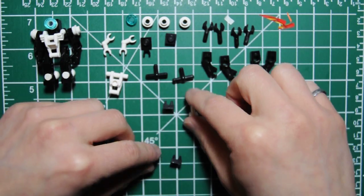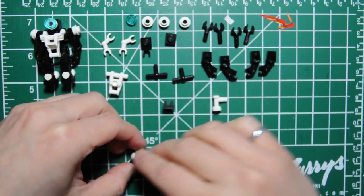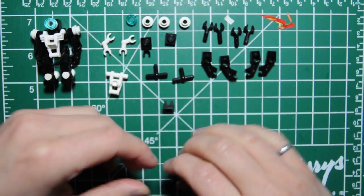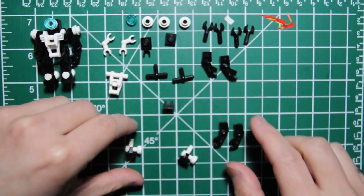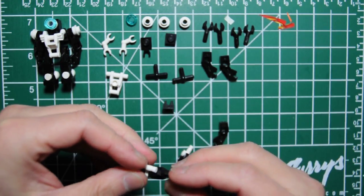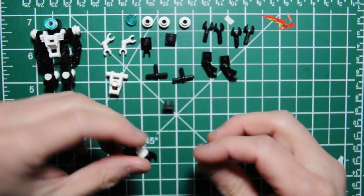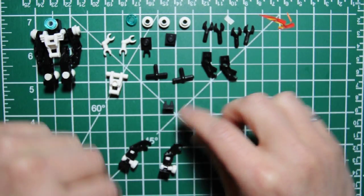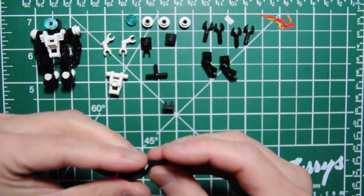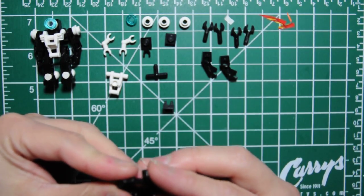To start off, we're going to build the legs. We're going to need these two taps and these two clips which form the bases of the feet. Then we're going to use these two droid arms, ironically enough, as the legs. They're connected with a black T-bar, which are connected like so.